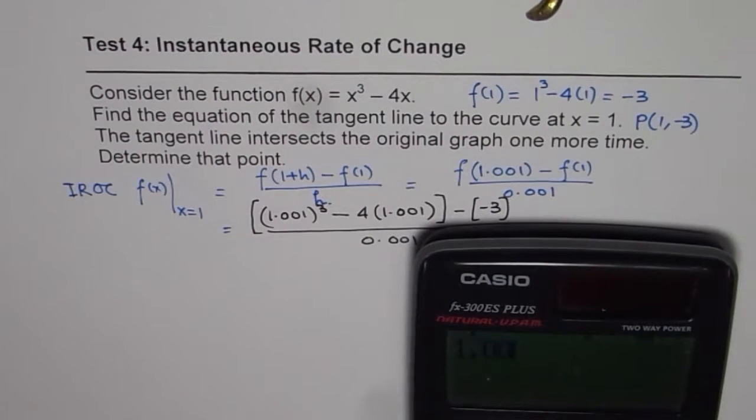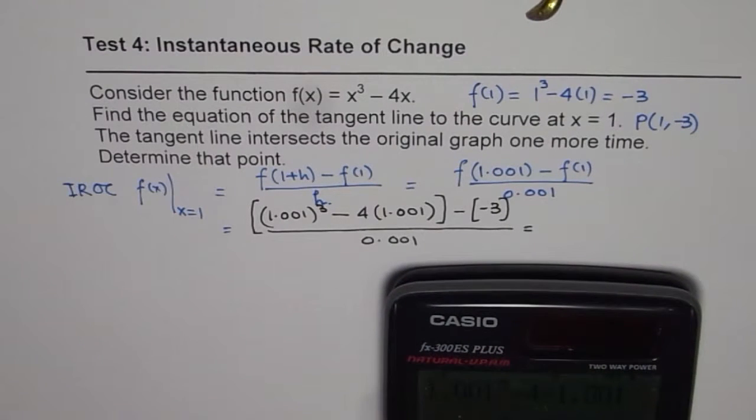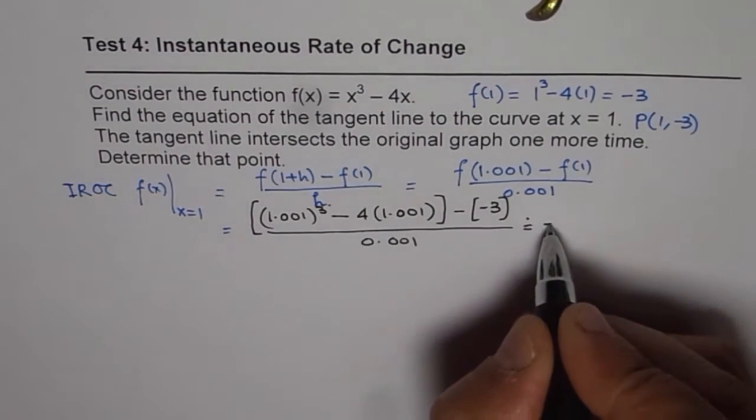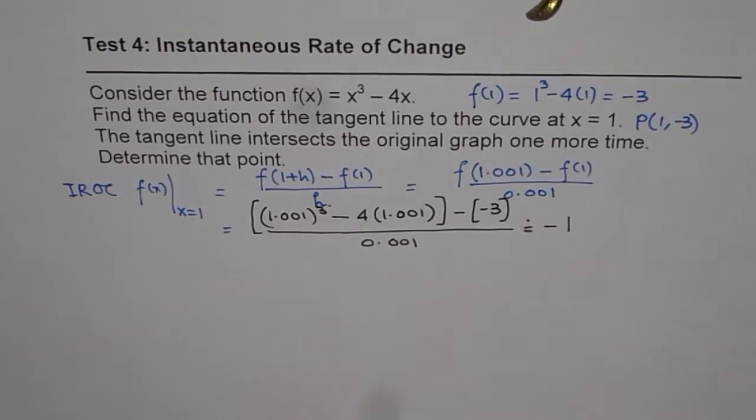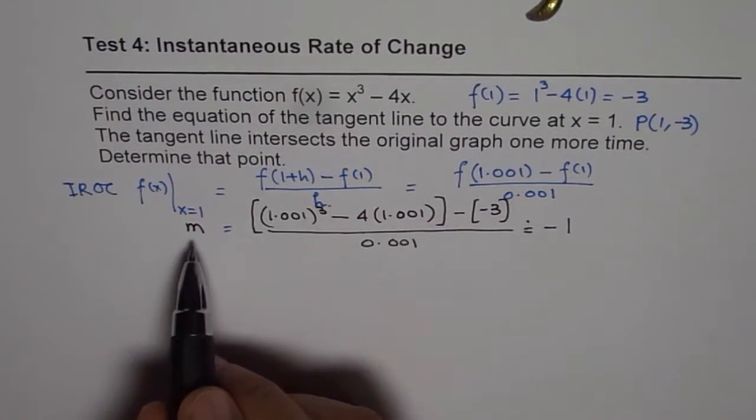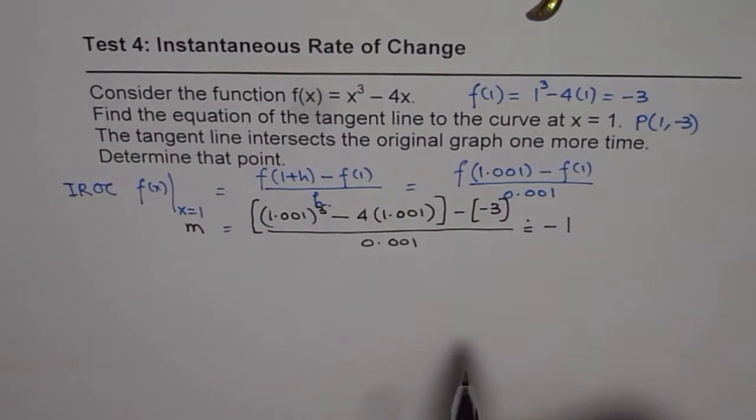So, you have 1.001 whole cubed minus 4 times 1.001. And then, from this value, you have to add 3. And then, you need to divide this by 0.001. So, we get minus 0.99699. So, it is approximately minus 1. So, we find that the instantaneous rate of change or slope at x equals 1 is minus 1.